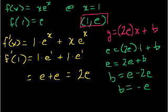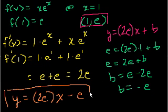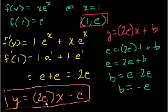Now we're done. The equation of the tangent line is y = 2ex − e. If you don't like the e's, you could replace them with 2.7..., giving something like 5.4...x − 2.7..., but y = 2ex − e looks much neater.